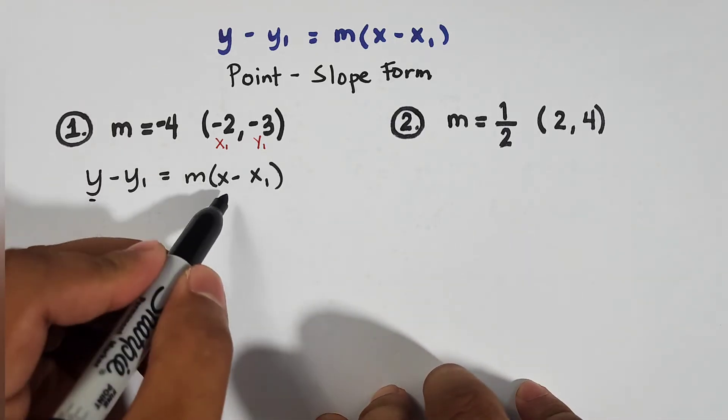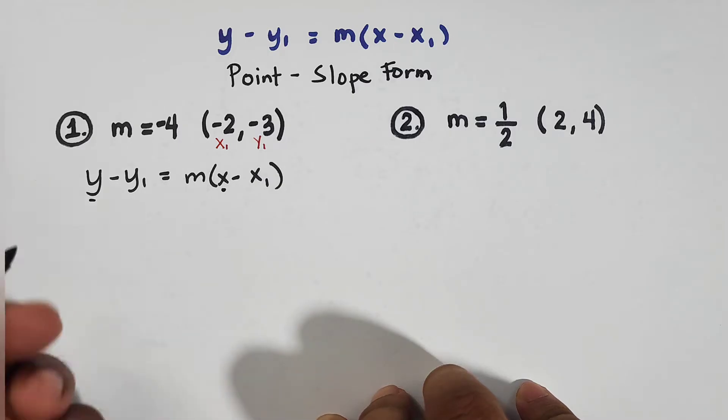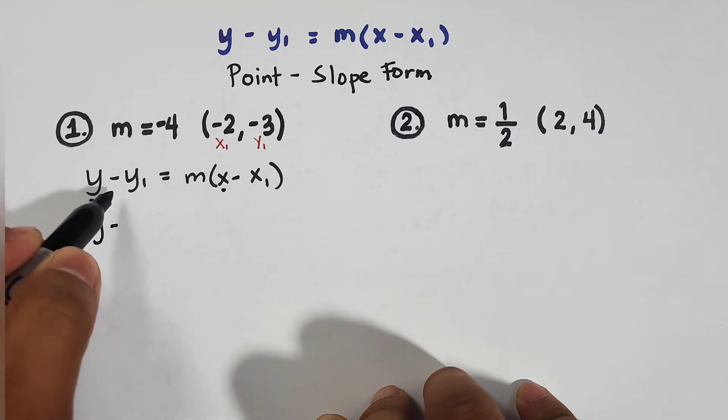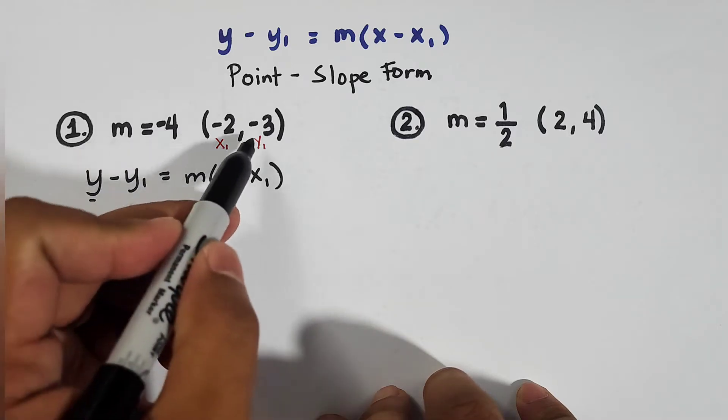For this variable y and variable x, we won't substitute anything. Copy y, then minus. Your y sub 1 is negative 3.